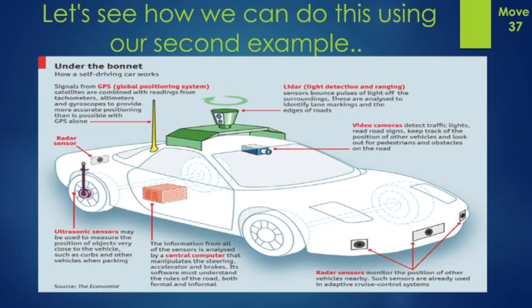Now to the next example — my favorite one: the self-driving car. Self-driving cars have many sensors they rely on to drive safely on the road. We have GPS, we have LIDAR, we have radar, we have a video camera, and more sensors.